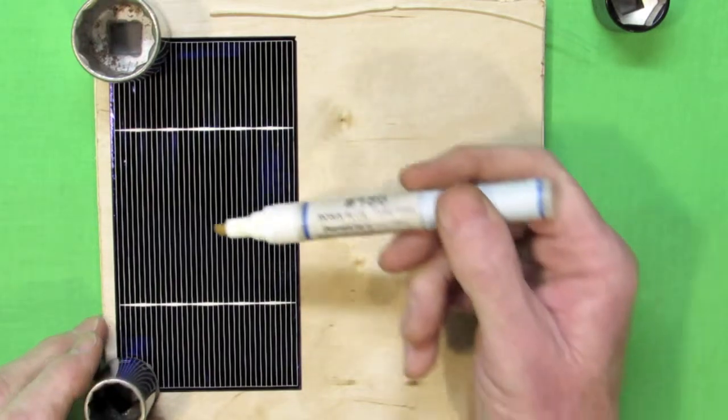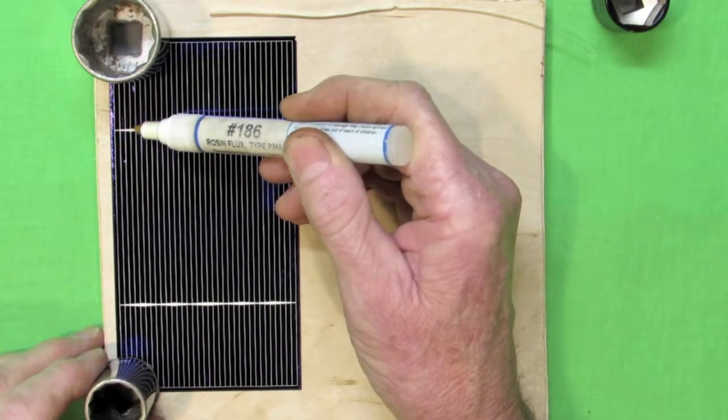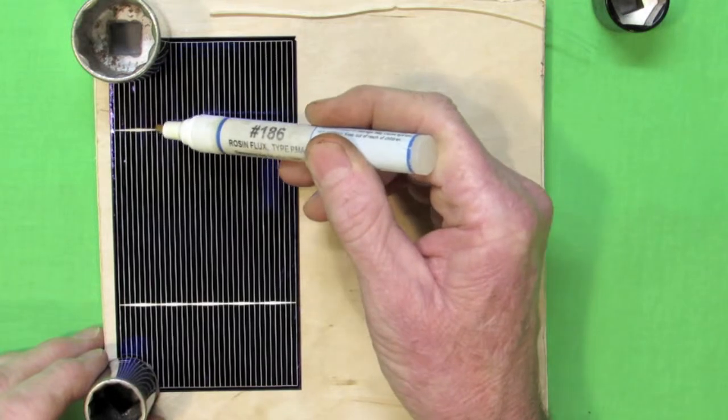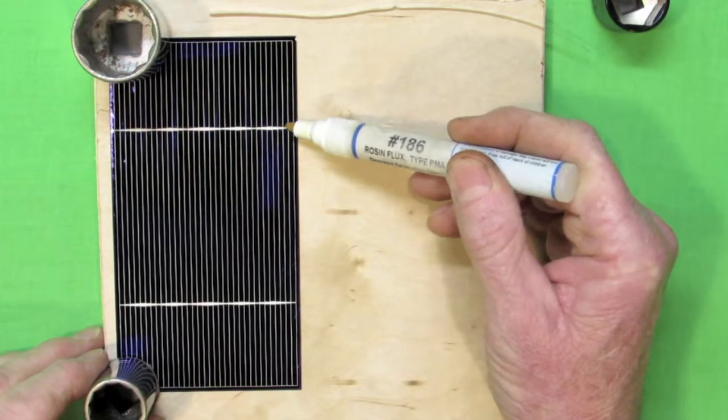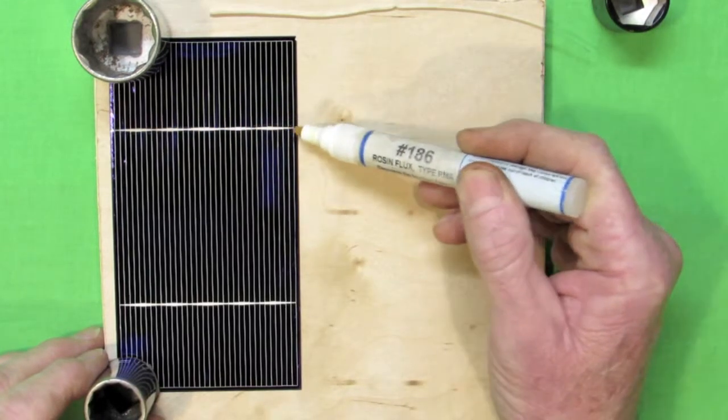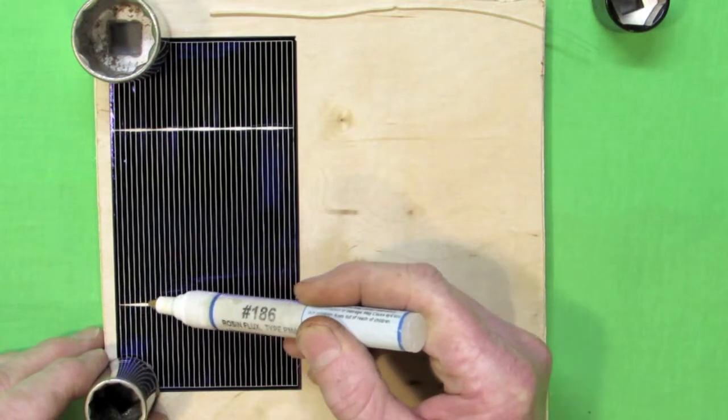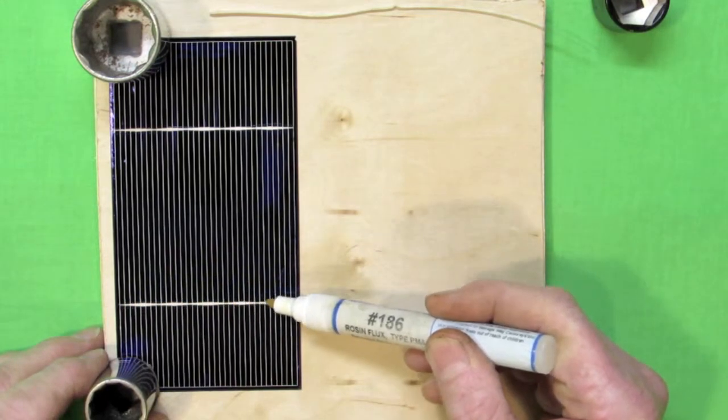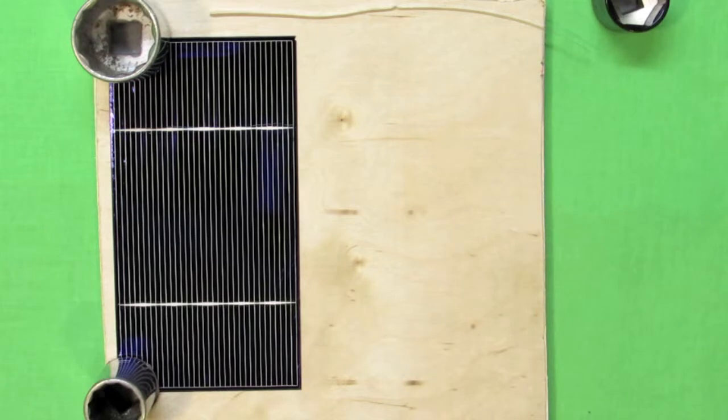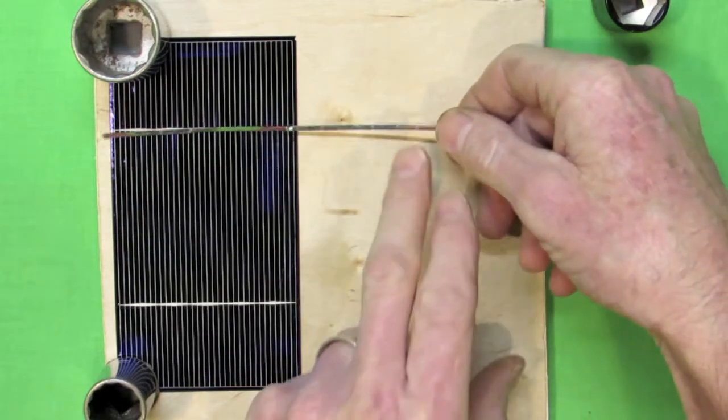Now you want to put your solar cell onto a good solid work surface. In the instruction manual I talk about how great glass is, and it is, however for filming a how-to video glass leaves a lot to be desired. Unfortunately it reflects the light and would greatly detract from your viewing experience. So I'm using a very good piece of pine board.